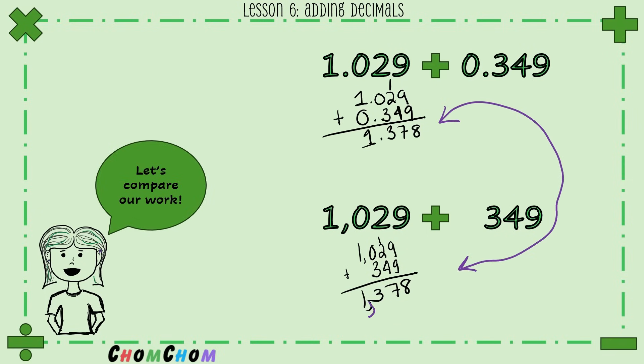They have the same solution, so we did all the same adding work. It's just the biggest difference is the decimal point and the comma. So the biggest difference between adding decimals and adding normal whole numbers is the decimal point itself - it's not the actual adding.